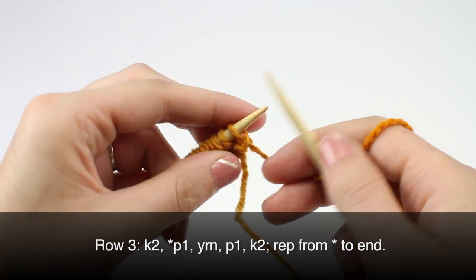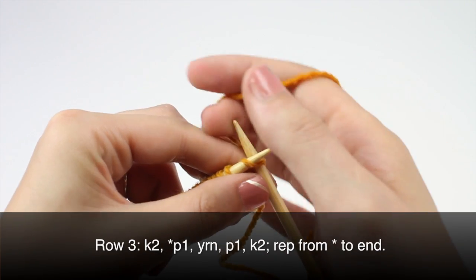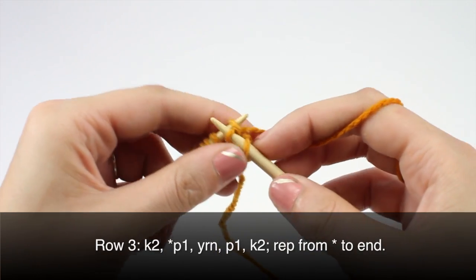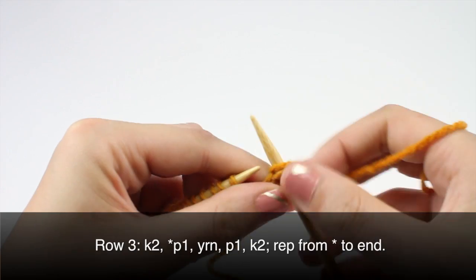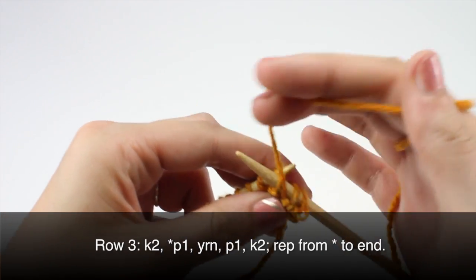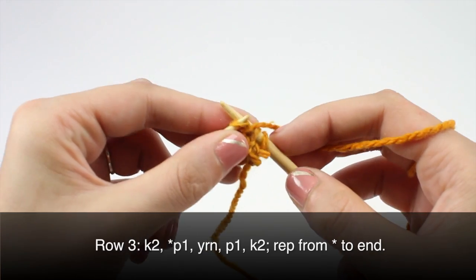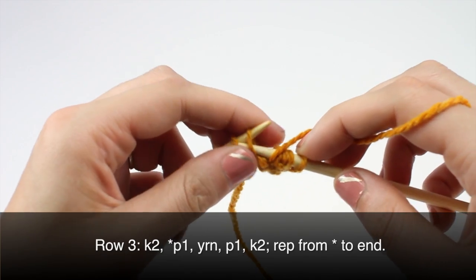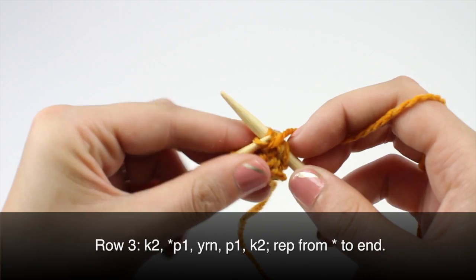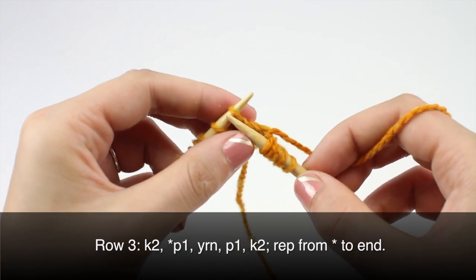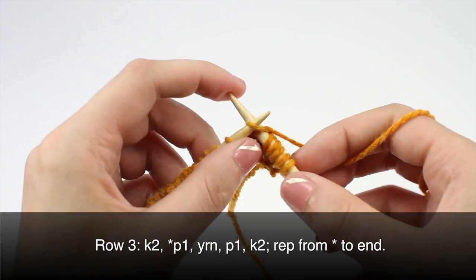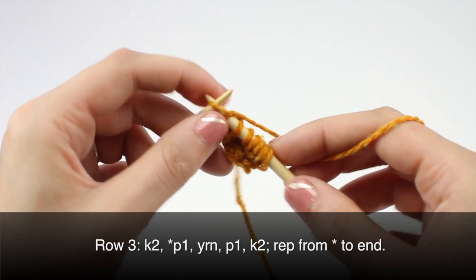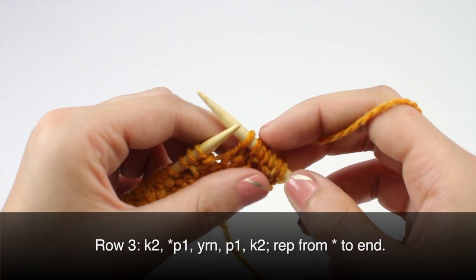Row three. Begin by knitting two. And begin your repeat by purling one. Then we'll yarn round needle and purl one. And knit two. Repeat this until the end of the row.